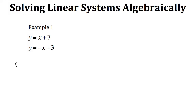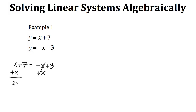So we have y, which is the same thing as x plus 7, equal to negative x plus 3. Now as you can see, we only have one variable we're working with. So we just need to isolate that variable. Let's take this negative x and move it over to the other side with the other x — we'll add x to both sides. It'll cancel out on the right, and that leaves us with 2x plus 7 equals positive 3.